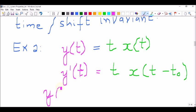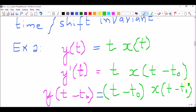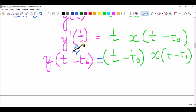Now, let us see what is y(t - t0), which equals (t - t0) times x(t - t0). Clearly, the relation between y prime and y(t - t0) is not unique. Hence, the system here is not time-invariant.